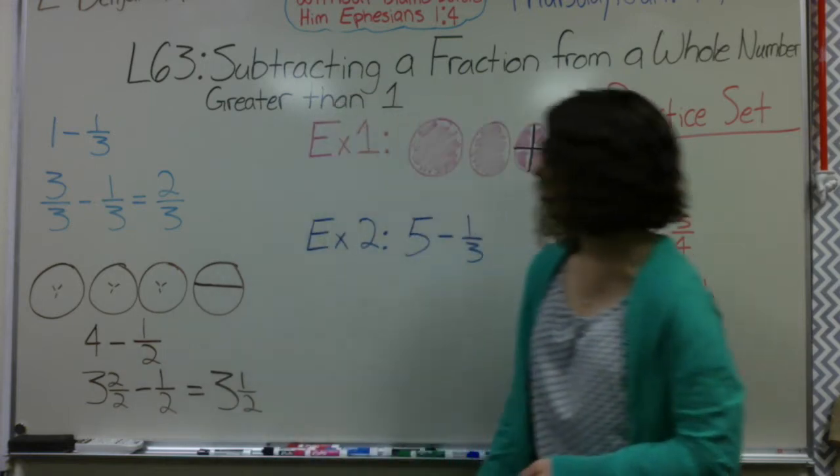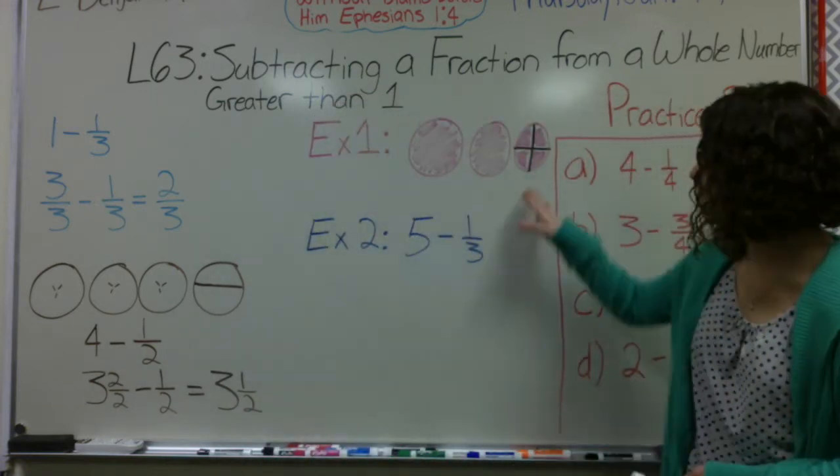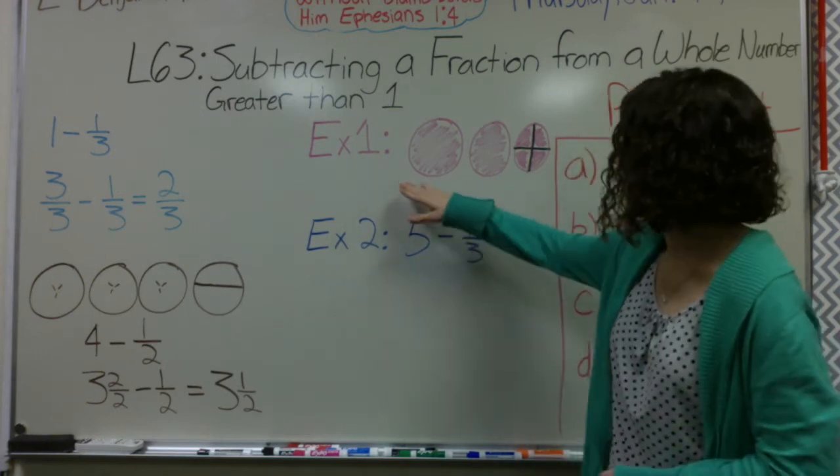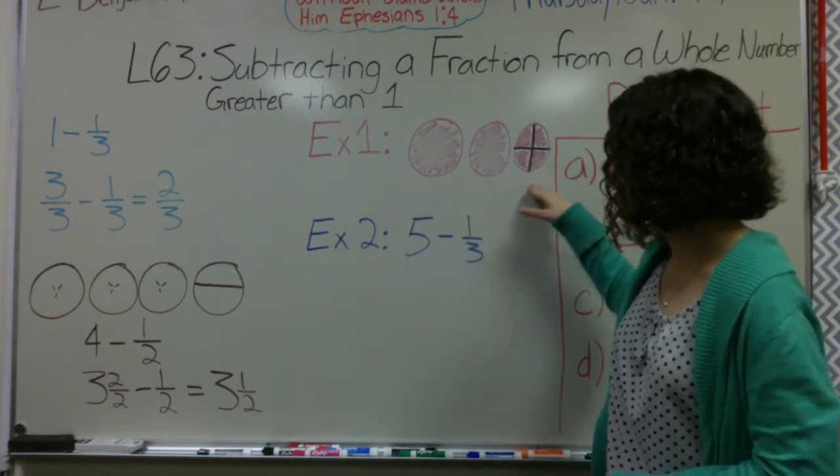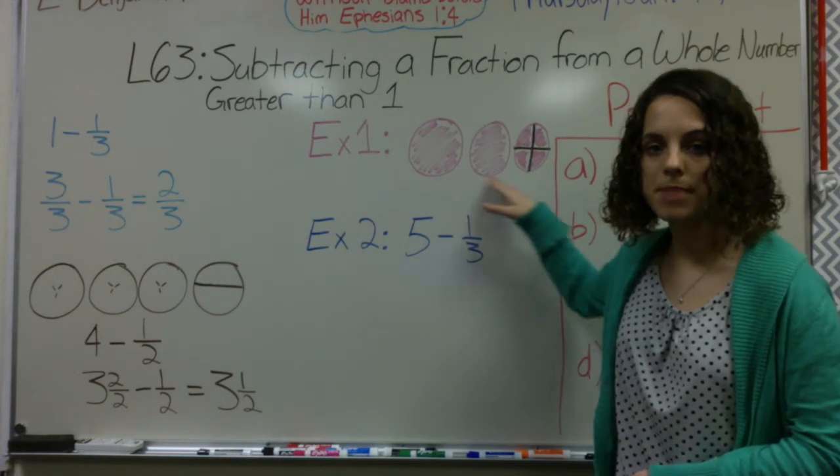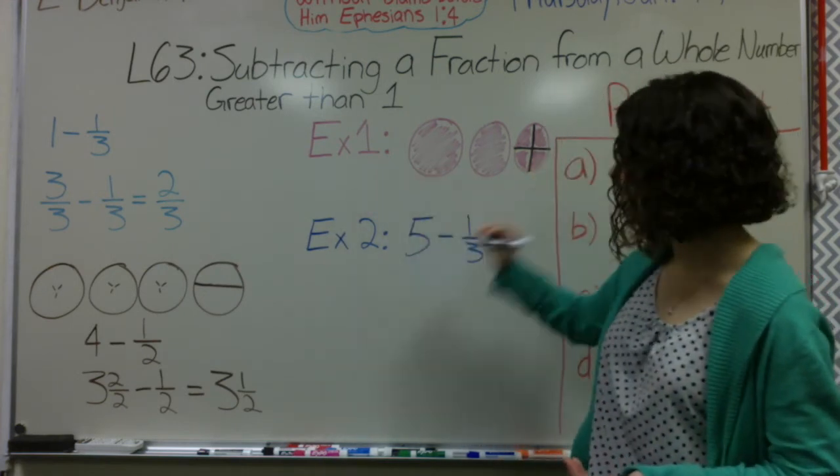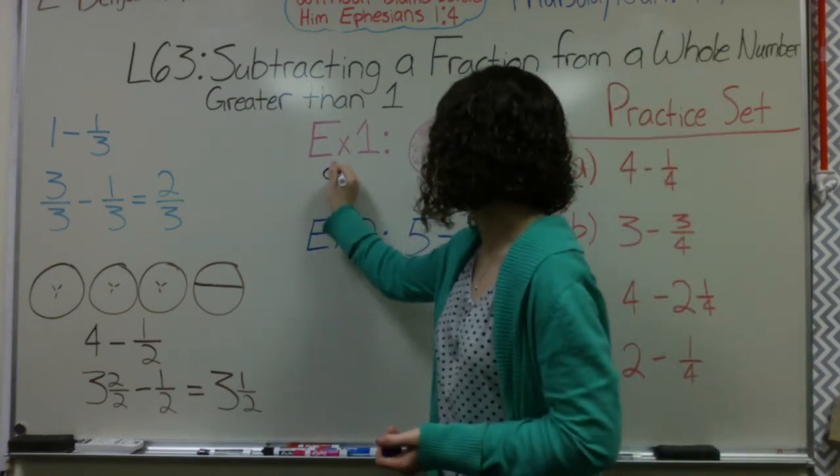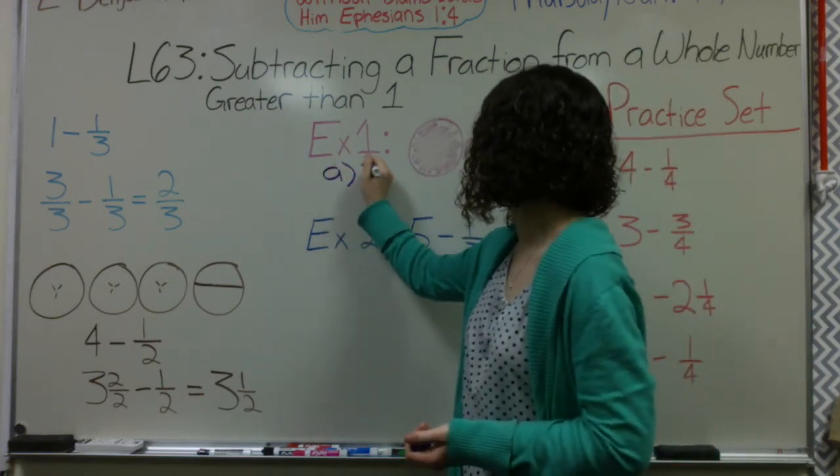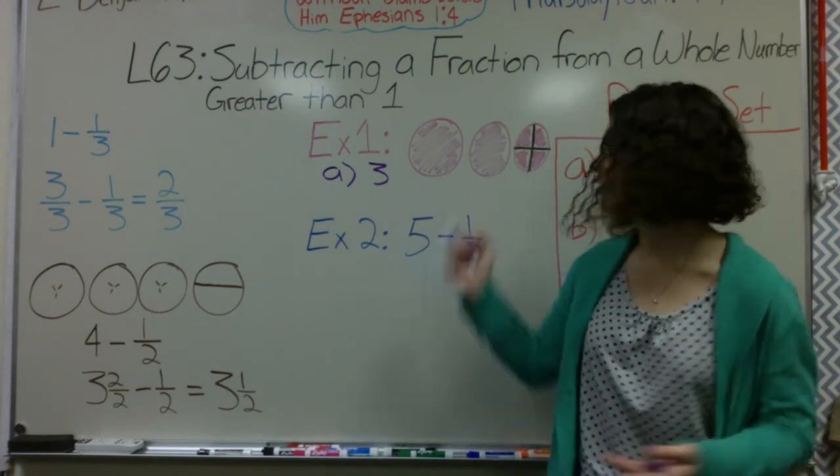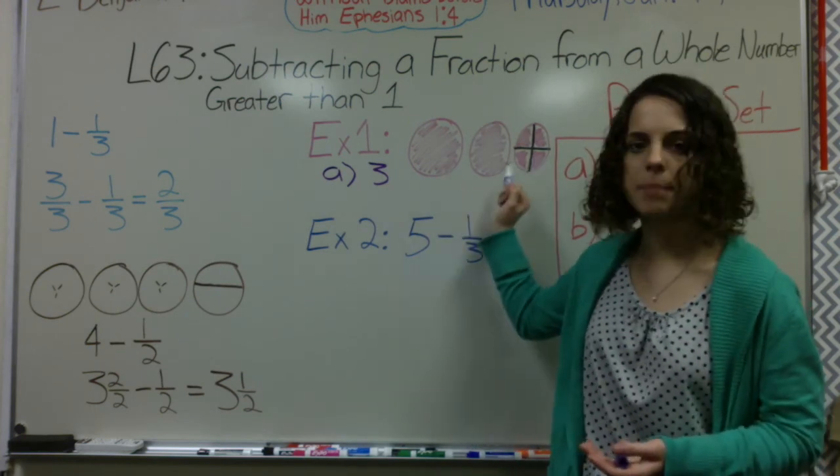The first example we're going to look at is fairly simple. I have a picture of 3 circles and I want to write what this looks like as a whole number and what it looks like as a mixed number. We have 3 whole circles shaded in. So part A writing it as a whole number would simply be 3. And you do need to write these down please. And you should probably also draw these pictures.